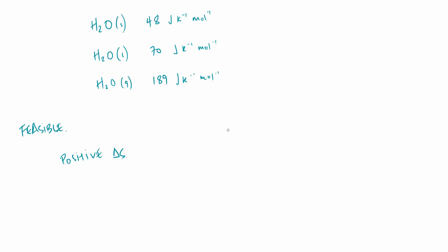Here's an example: the formation of calcium oxide from calcium carbonate. The entropy change is calculated as the sum of the entropy of the products minus the sum of the entropy of the reactants, taking into account molar ratios. In this case it's one to one to one, so we don't need to worry about that. But these are molar entropy values — if we had two moles of calcium oxide, we'd have to double that value.